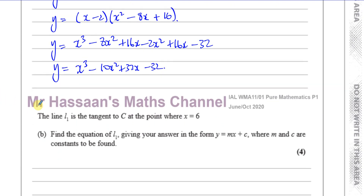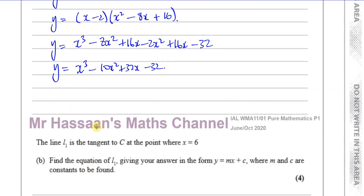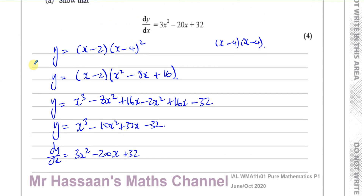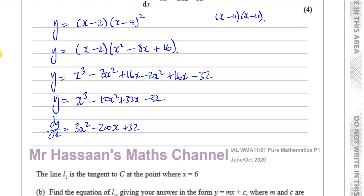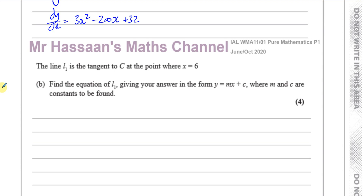Now differentiating: dy/dx — you multiply by the power and reduce the power by one. So 3x², then 2 × (-10) = -20x, then 32 × x⁰ = 32. The constant -32 differentiates to 0. So dy/dx = 3x² - 20x + 32, which is exactly what we had to show. Show your steps very carefully because the answer is given — you can't jump straight to it or you will definitely lose marks.